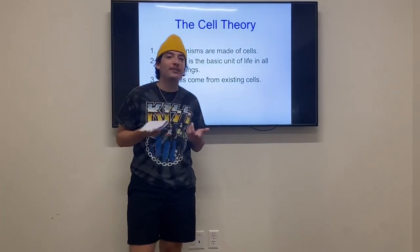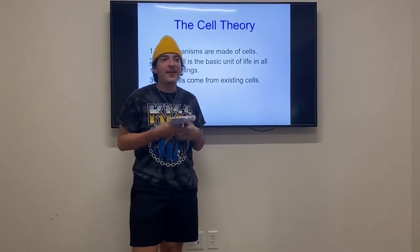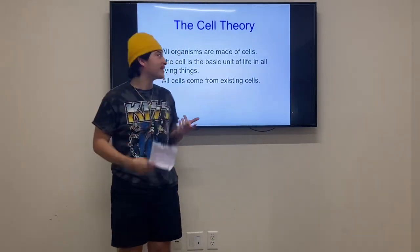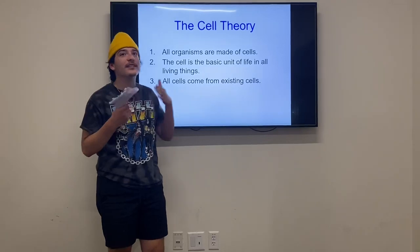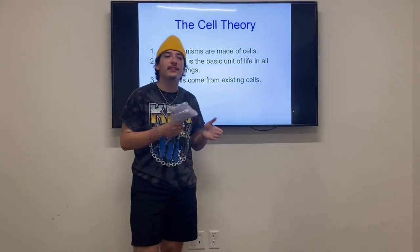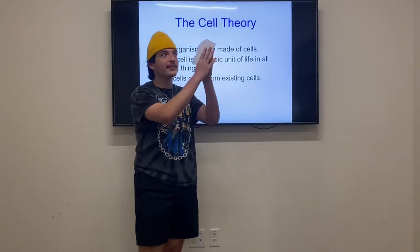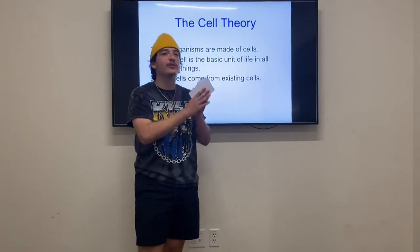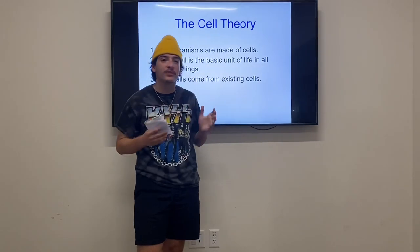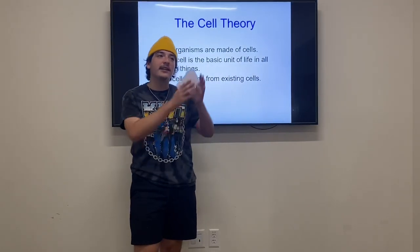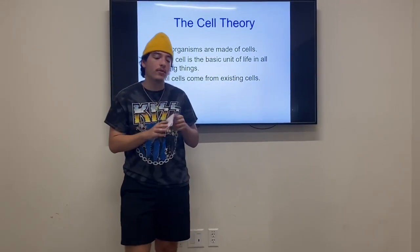You might ask, where do cells come from? Well, cells come from other existing cells. They kind of, like parents, have children, and their children have children, so they multiply more and more.